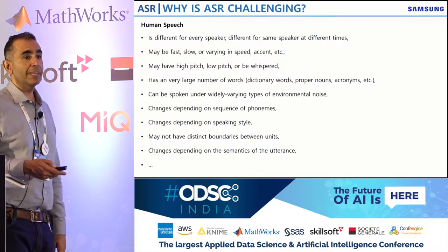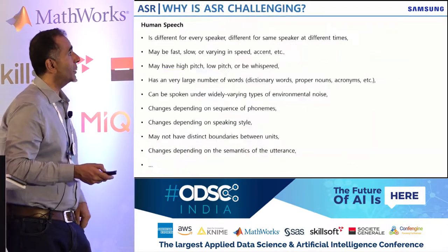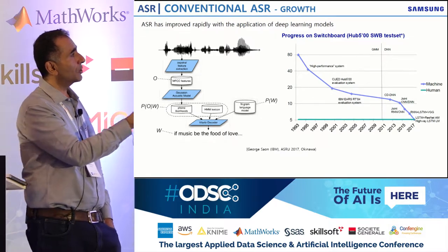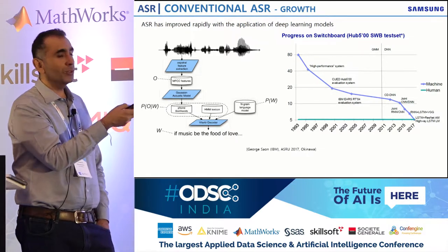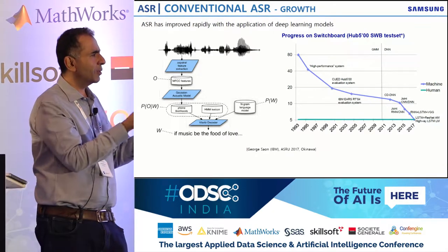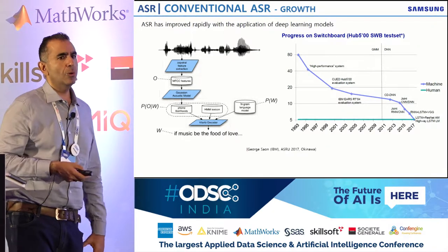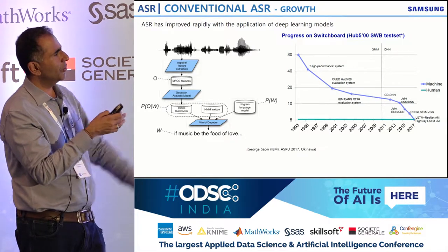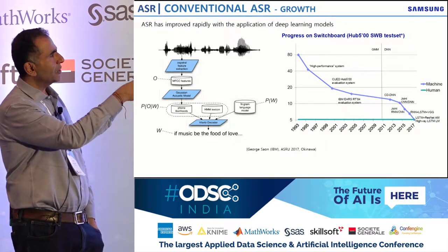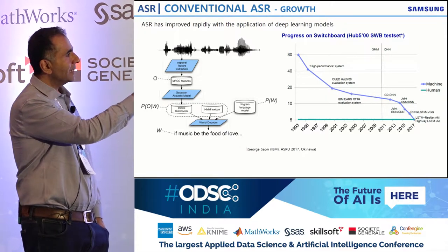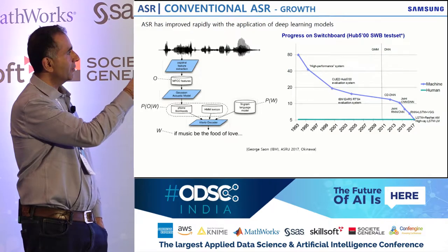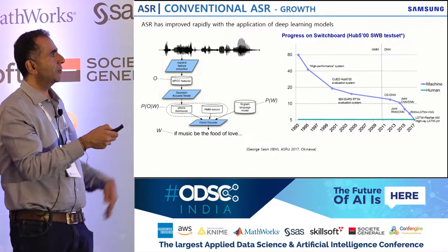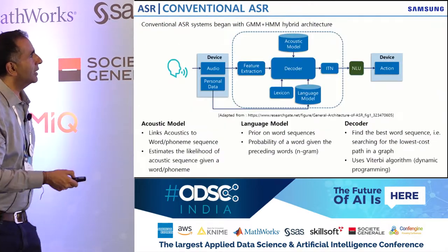Deep learning has been used a lot in speech. Initially, GMMs and HMMs were used together. Around 2011-2013, DNNs really took over, and since that time speech recognition accuracies have improved a lot. I'm going to explain exactly how a typical ASR works. Assuming wake-up is done, audio comes in and feature extraction happens, producing speech features, followed by some preprocessing.